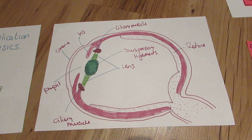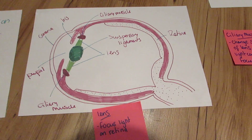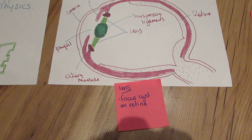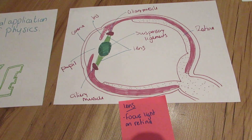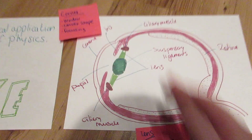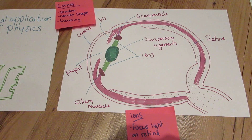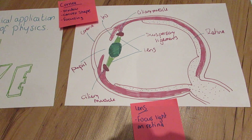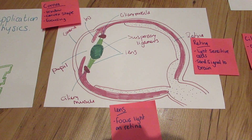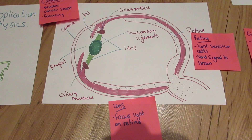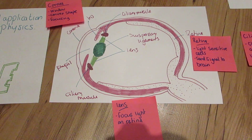So what do all these different parts do? The lens and the cornea together are responsible for focusing the light on the retina. The cornea is the window into the eye — it has a convex shape and does most of the focusing. It focuses the light onto the retina, which is where all the light-sensitive cells are, and this is what sends a signal to the brain.